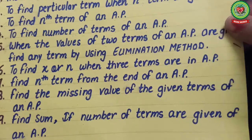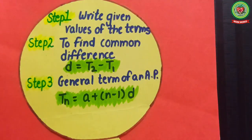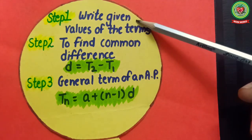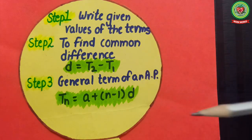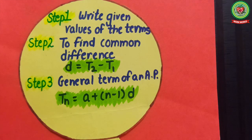Type 1: when we have to find the general term or Nth term of an AP, we have three steps. Step 1: write the given values of the terms. Step 2: find the common difference. Step 3: apply the general term formula, that is Tn = a + (n−1) × d, from where we can easily find our Nth term.